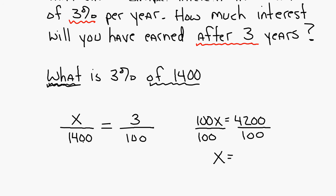Divide each side by 100. And x, or the interest in one year, is going to be your 4,200 divided by 100, is $42. How much interest will you have earned after three years will be equal to $42 times 3. Very good, $126.